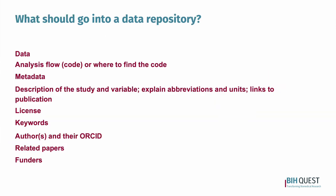When you deposit data in a repository, what else should go there aside from the data? Include the analysis code or a link to where it can be found, your organized metadata file, a description of the study explaining abbreviations and units, a linked metadata dictionary, the license you want to give to your data for reuse, keywords, the authors and their ORCID IDs, related papers, and very importantly — the funders that funded the study.